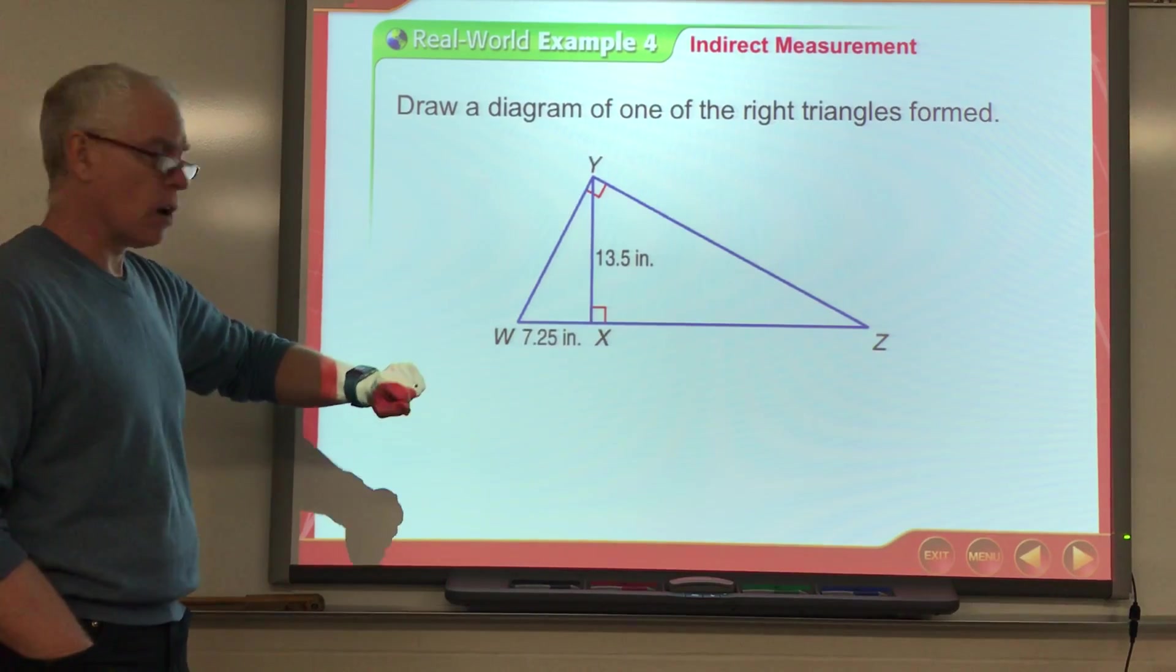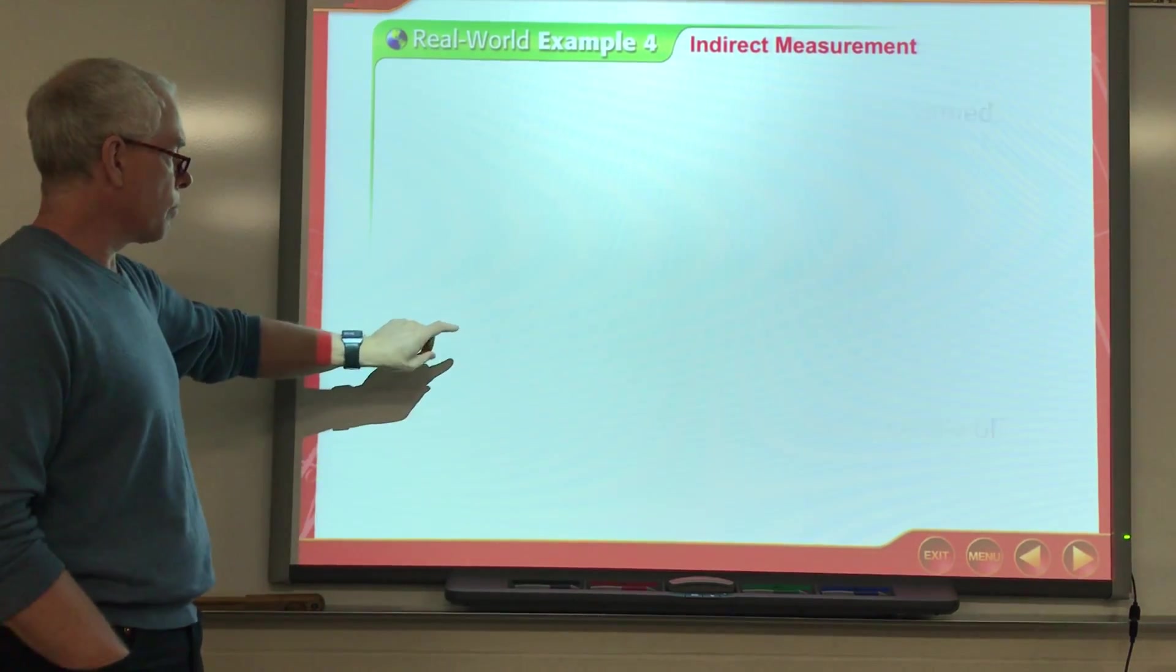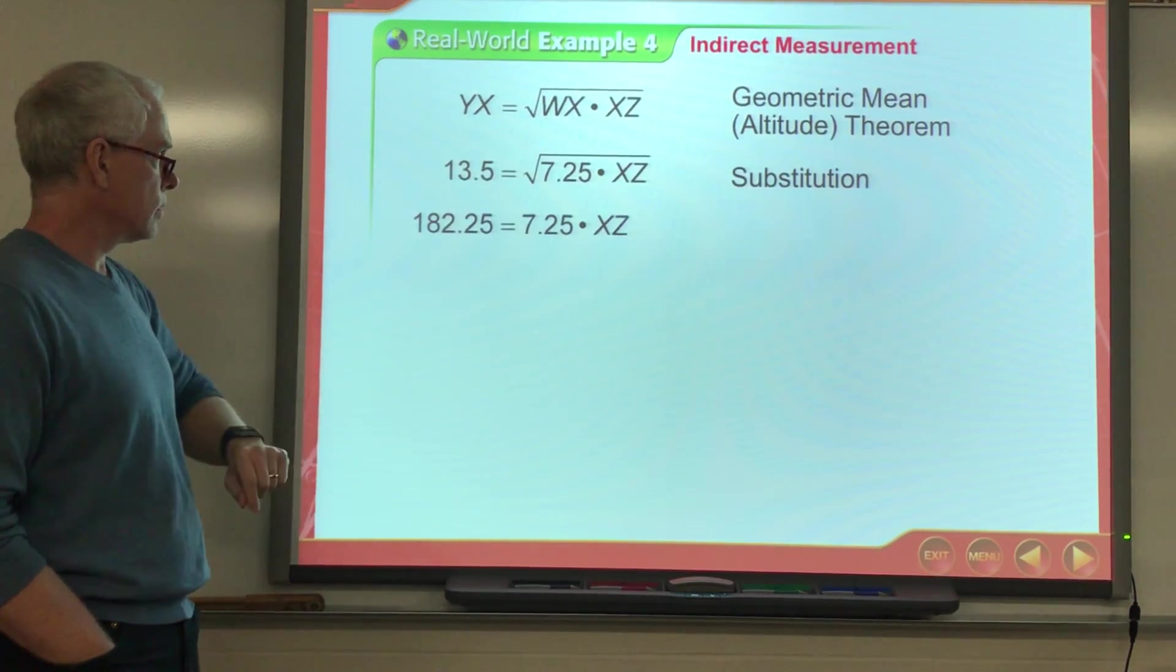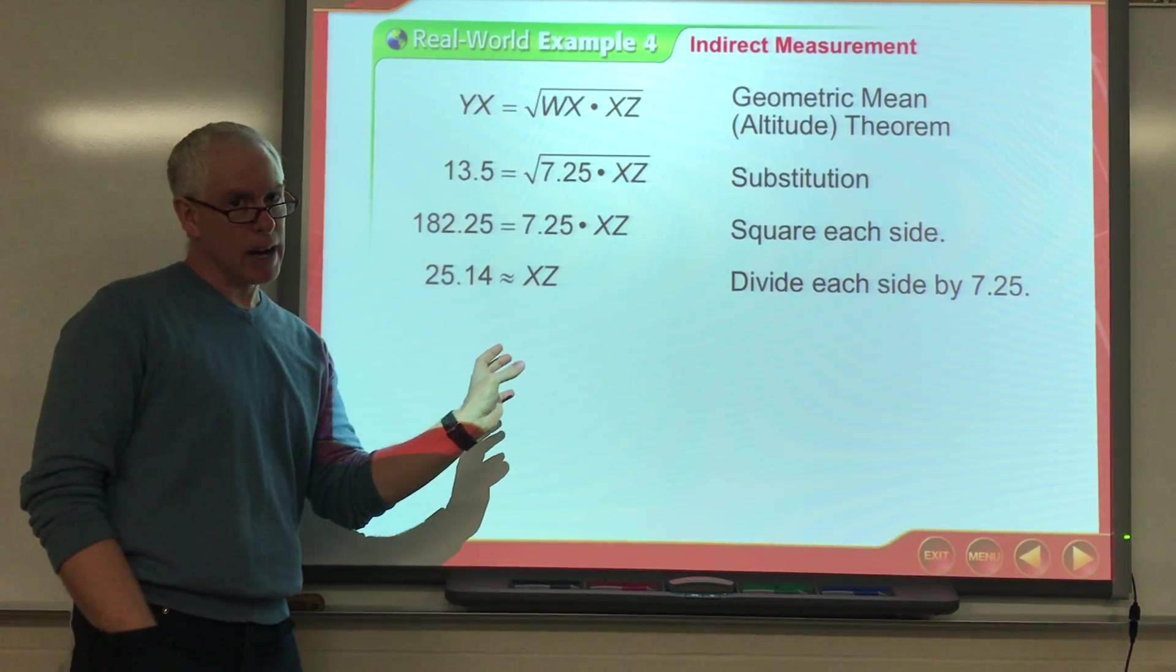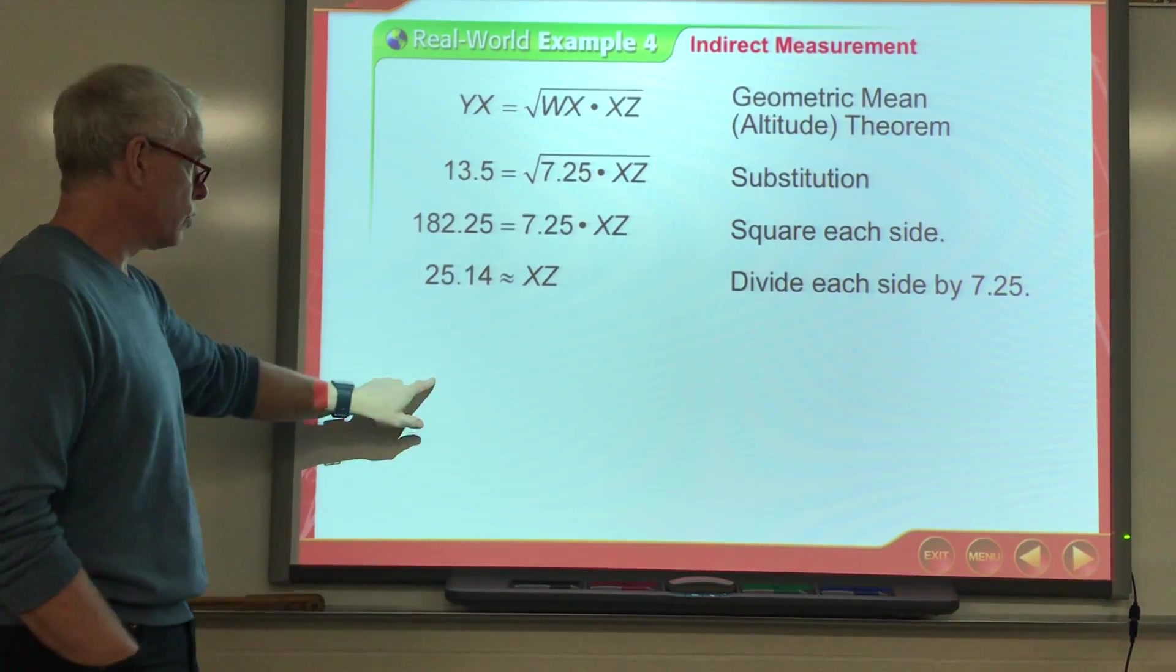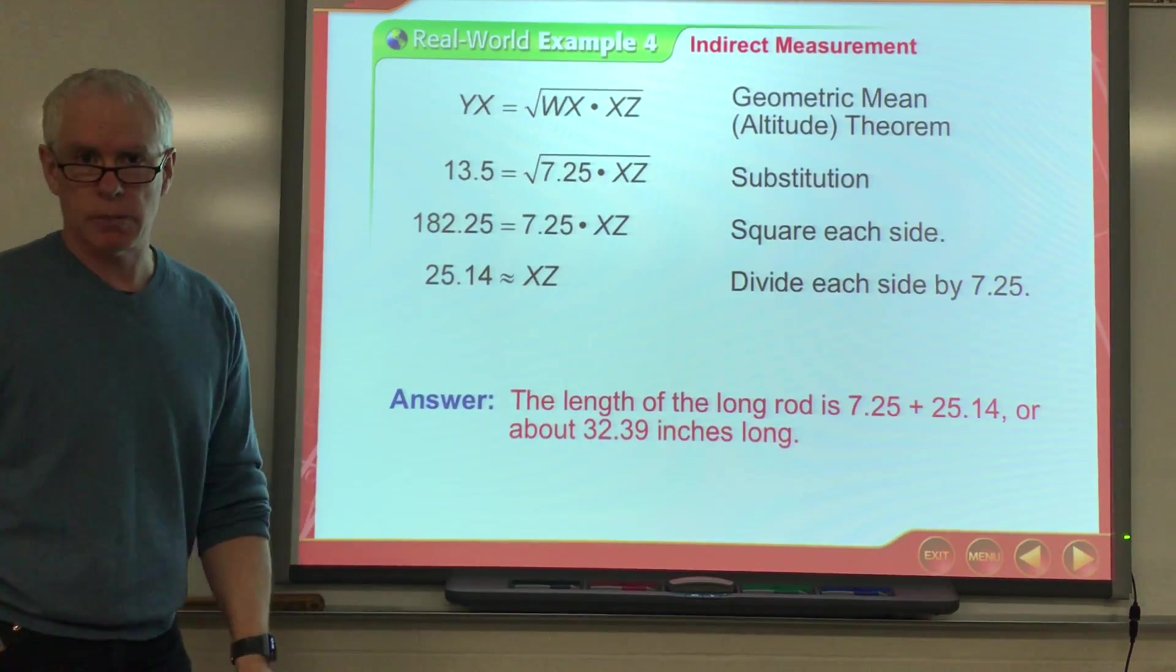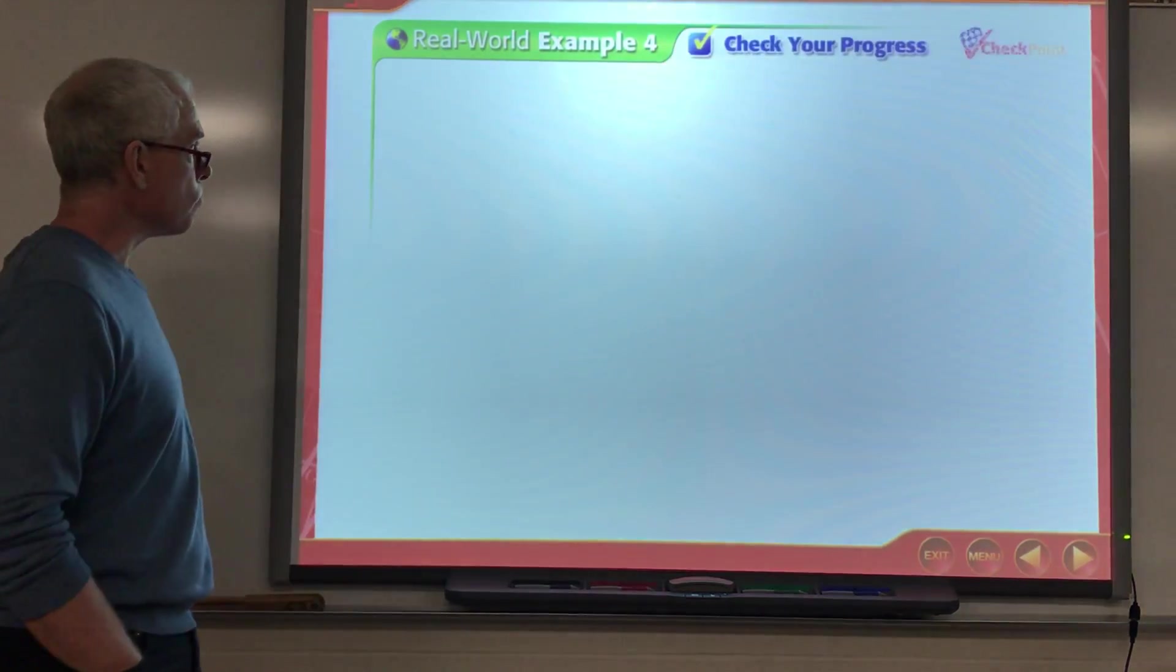So, if we follow, there's the triangle that I just sketched for you and that's how they got it. Okay. So, we're going to set up that proportion. Square both sides. Divide by 7.25. And so, that one length is 25, but then I've got to add that 7.25 back in and I get 32.39 approximately for the length of that entire rod. Okay.